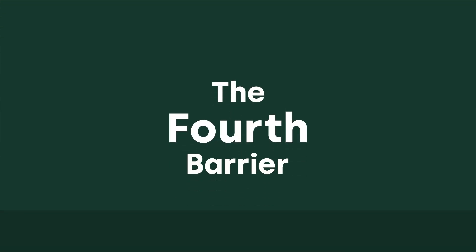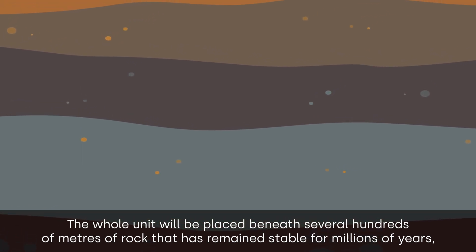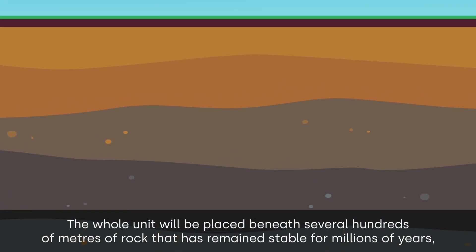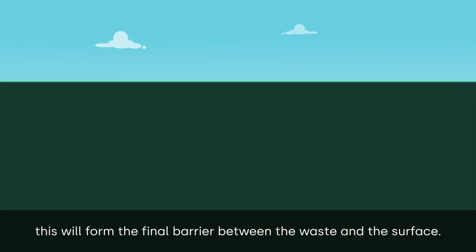The fourth barrier: the whole unit will be placed beneath several hundreds of metres of rock that has remained stable for millions of years. This will form the final barrier between the waste and the surface.